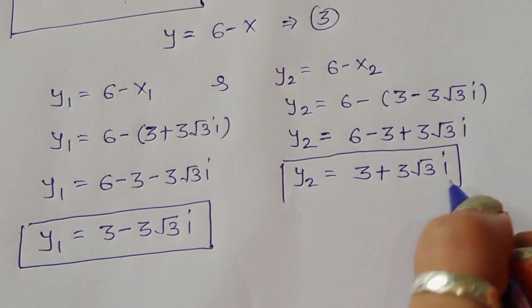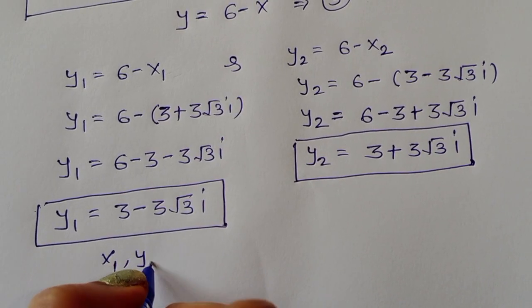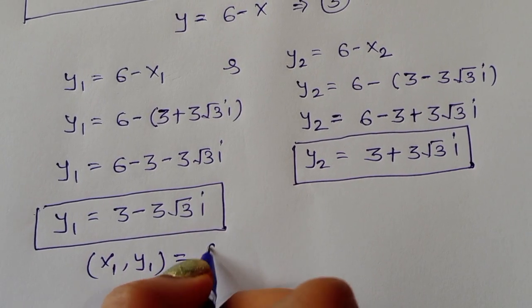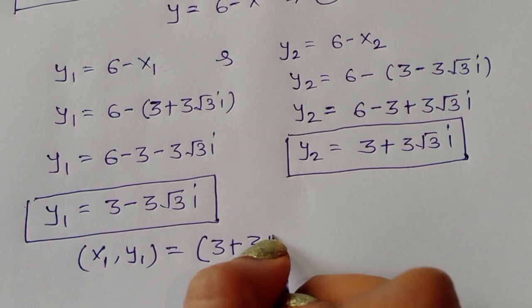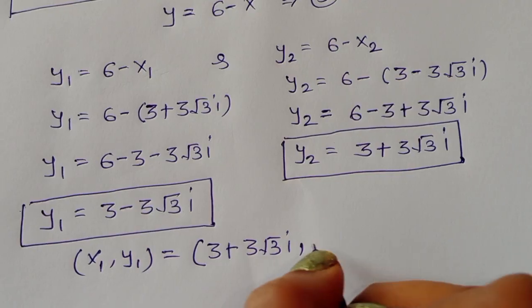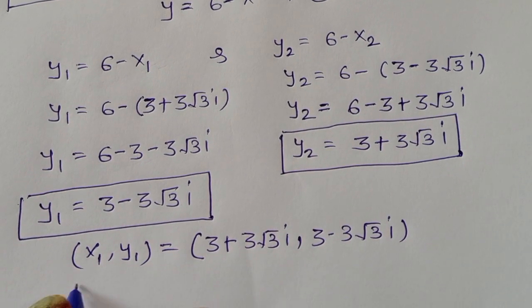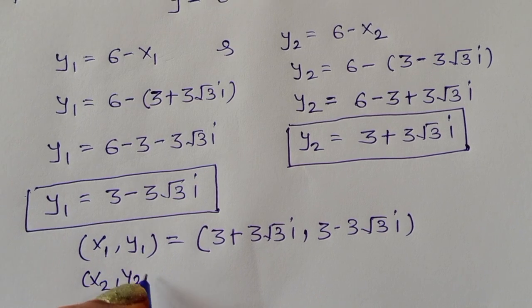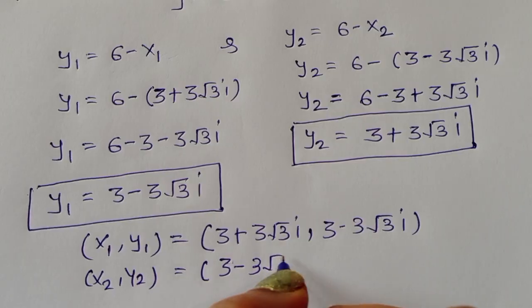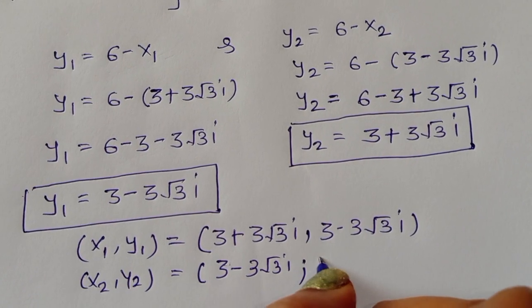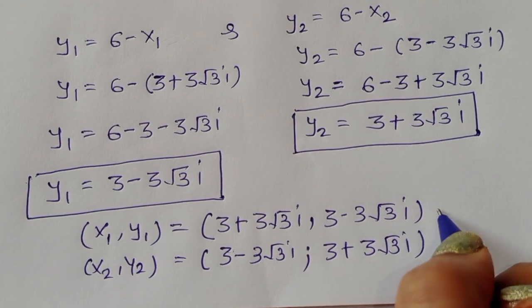So we have our solution pairs: when x1 equals 3 plus 3√3 i, then y1 equals 3 minus 3√3 i. And when x2 equals 3 minus 3√3 i, then y2 equals 3 plus 3√3 i.